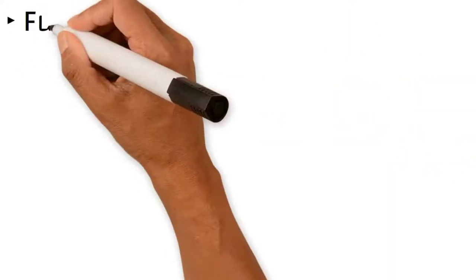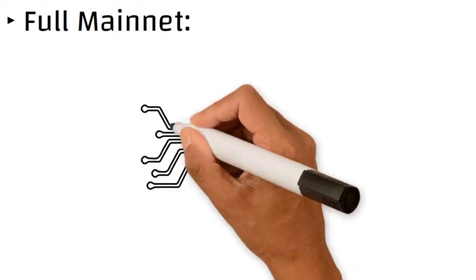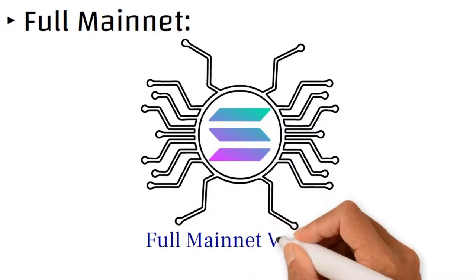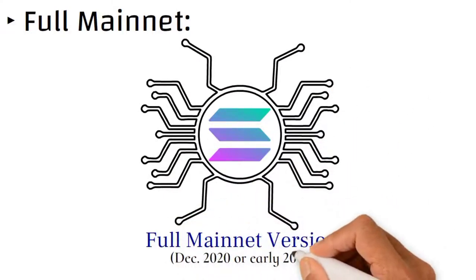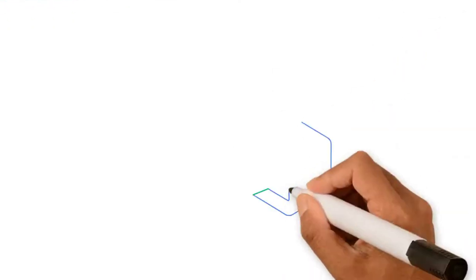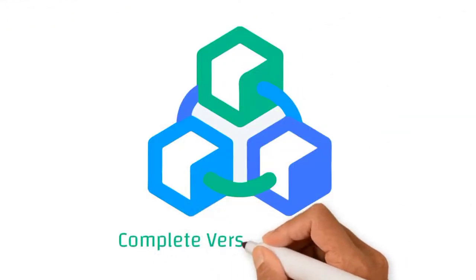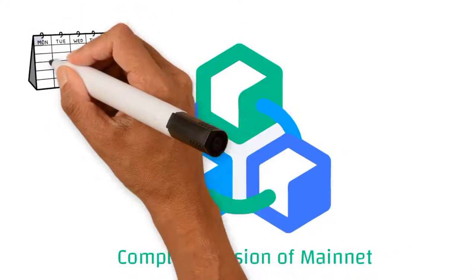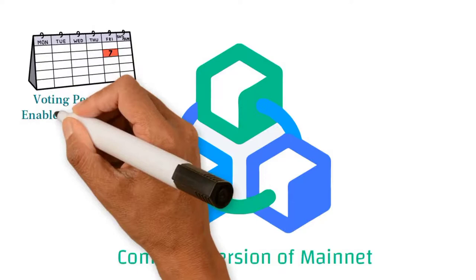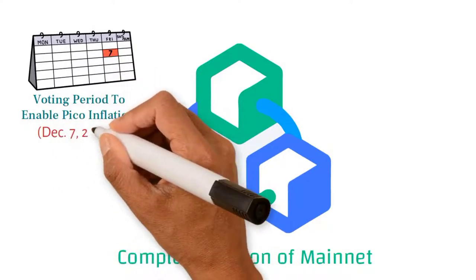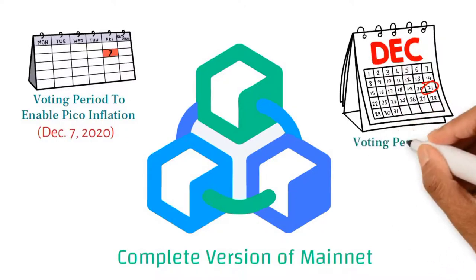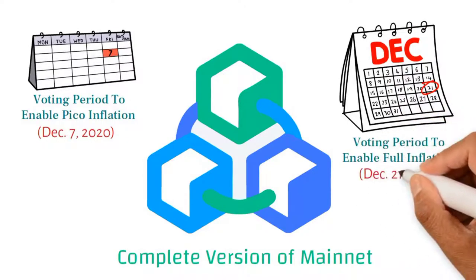Full Mainnet. Solana plans to upgrade its network from Mainnet Beta to a full Mainnet version either later in December 2020 or early 2021. This more complete version of Mainnet will introduce Solana's proposed inflation schedule. The voting period to enable PICO inflation on the Mainnet Beta will start on December 7, 2020, while the voting period to enable full inflation will start on December 21, 2020.